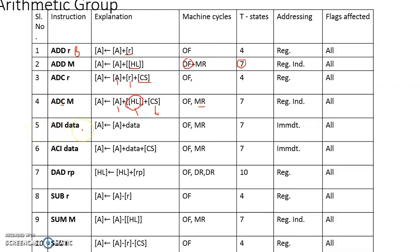The fifth instruction is ADI data — for example, ADI 05H. This asks the microprocessor to add the content of the accumulator with the immediate data specified as the second byte of the instruction. This is a two-byte instruction: the first byte contains the opcode for ADI and the second byte contains the immediate data, occupying two consecutive memory locations in the program.